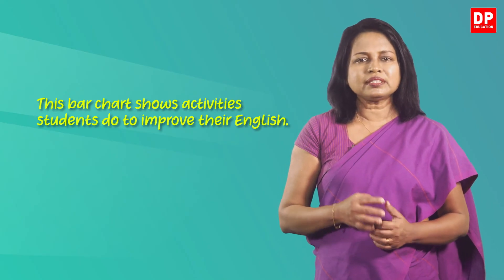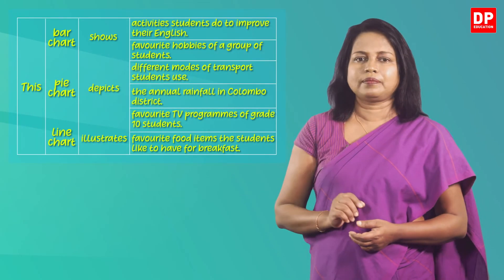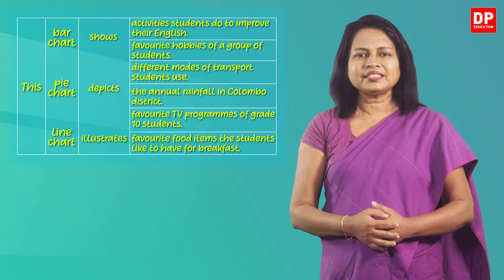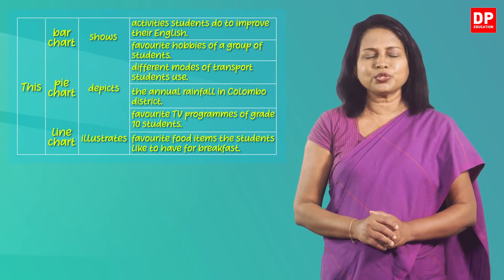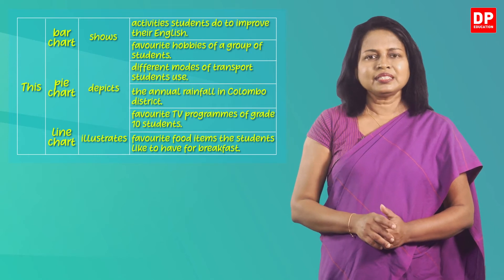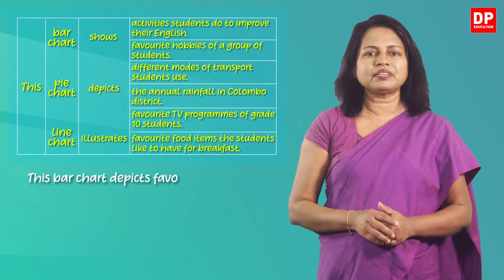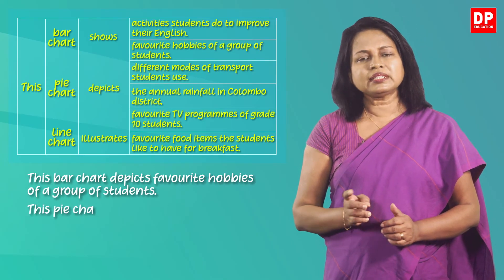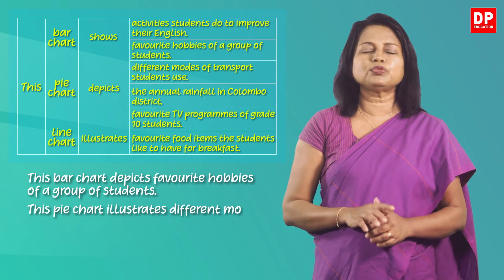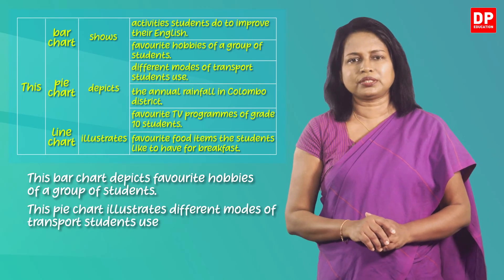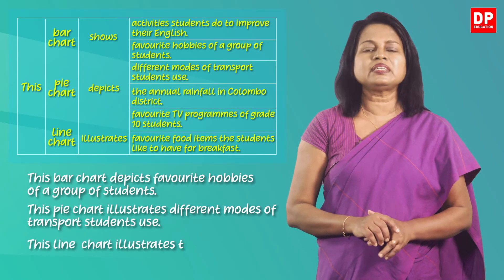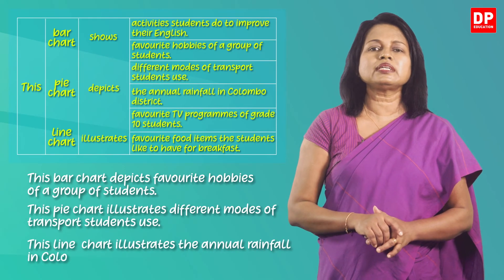You can practice how to write the first sentence using this substitution table. Pause the video and practice now. Let's see some sample sentences you can write. 'This bar chart depicts favourite hobbies of a group of students.' 'This pie chart illustrates different modes of transport students use.' 'This line chart illustrates the annual rainfall in Colombo district.'